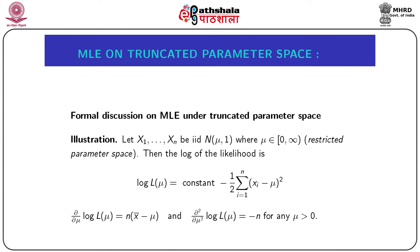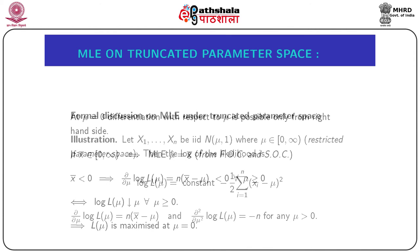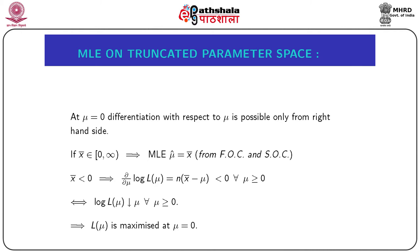Now for a formal discussion, let x₁, x₂, ..., xₙ be iid Normal(μ, 1) with μ ∈ [0, ∞) — a restricted parameter space. The likelihood is L(μ) = constant · e^(−½ Σ(xᵢ − μ)²), so log L(μ) = constant − ½ Σ(xᵢ − μ)². The first-order derivative of log L(μ) with respect to μ is n(x̄ − μ), and the second-order derivative is −n for any μ > 0.